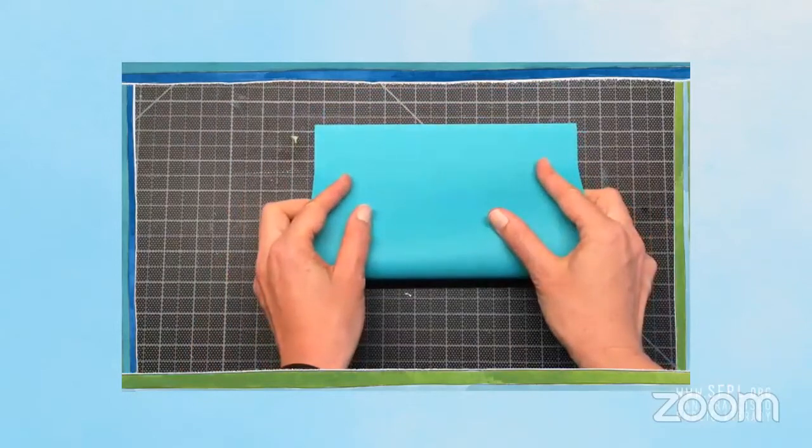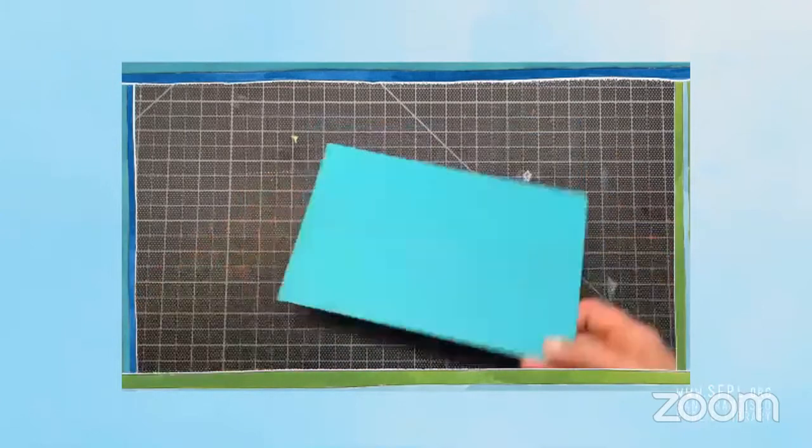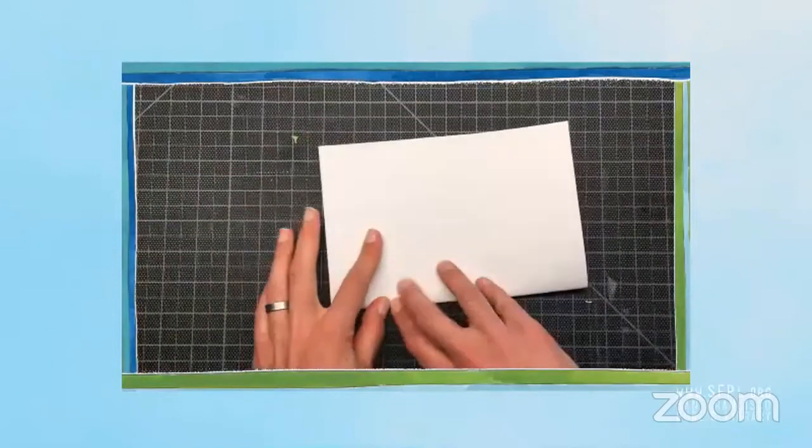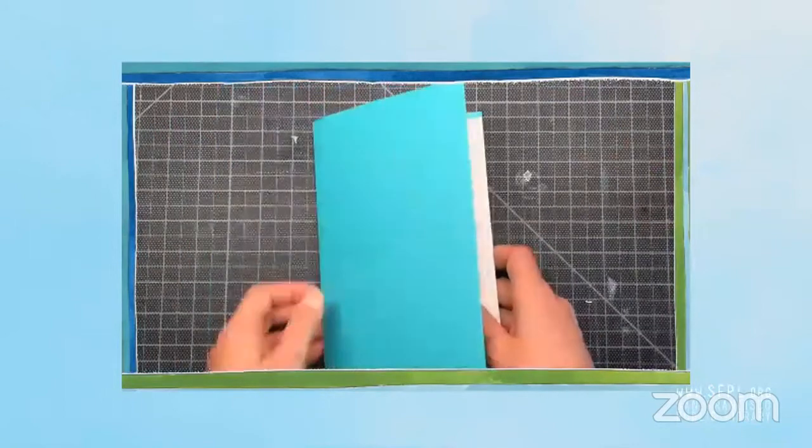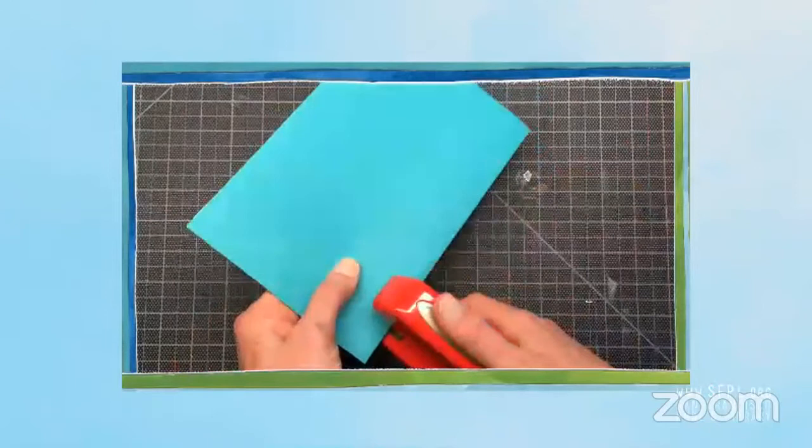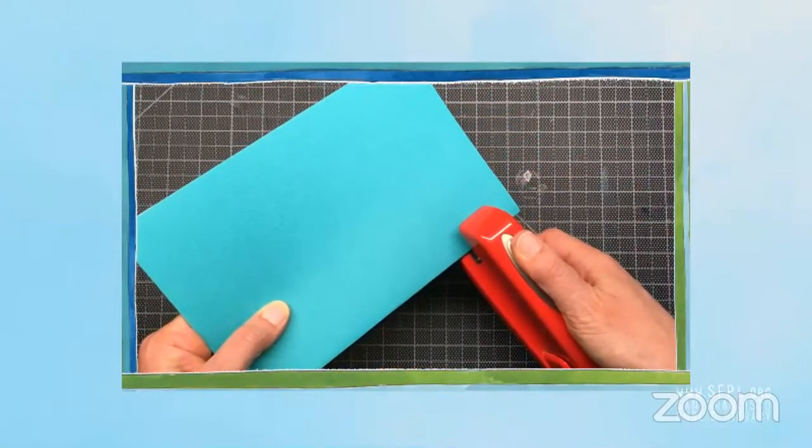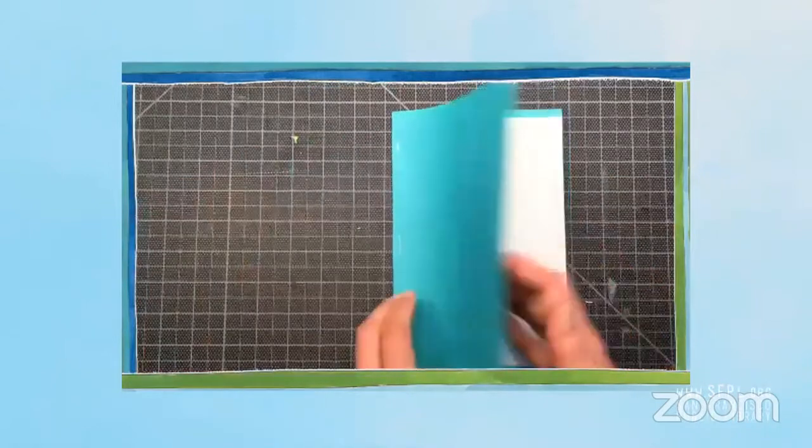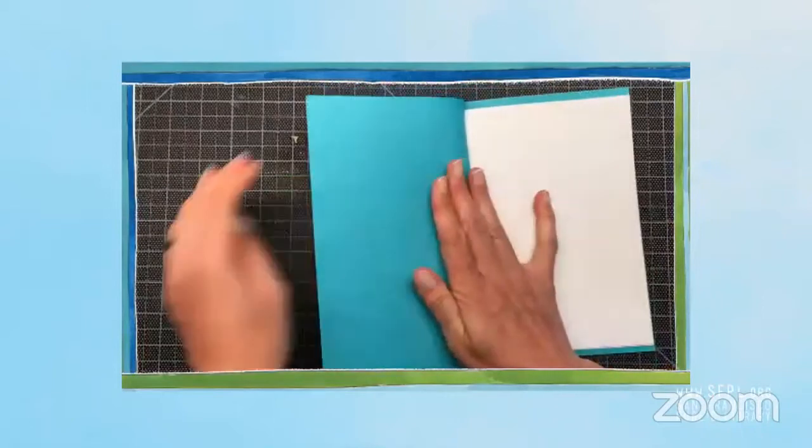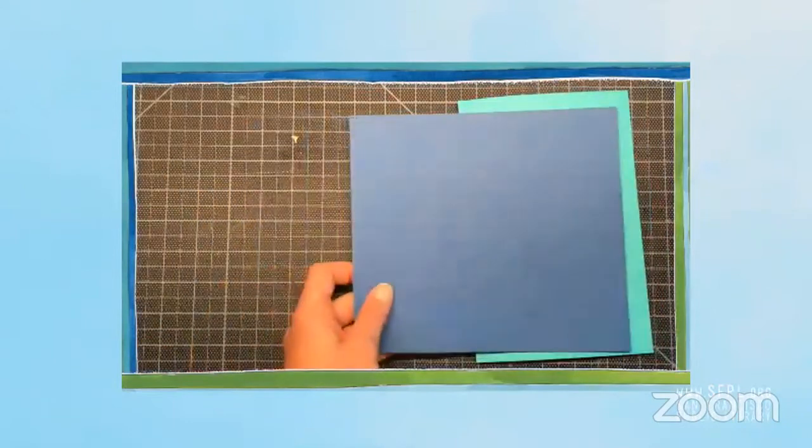Fold your cover paper in half and fold your interior paper in half. And then just put them together and staple them along the folded edge. Then I open the cover carefully and make a nice fold so the cover opens and closes well.